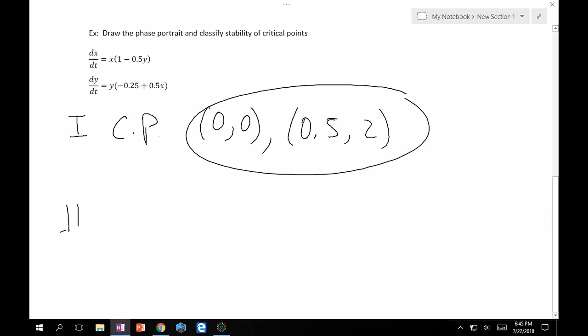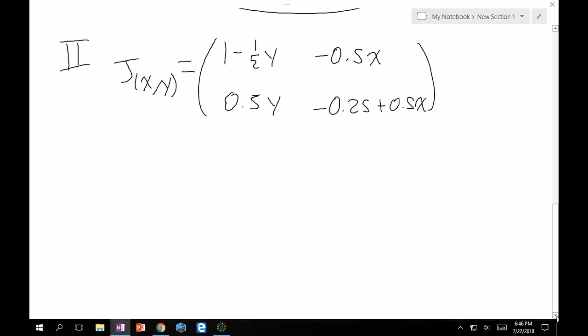Great. Let's find our Jacobian. Again, calculate this on your own time. This will be, and this, I mean, this is good practice, you know, one minus one-half Y, 0.5 Y, minus 0.5 X, and then minus 0.25 plus 0.5 X. Great. And then hopefully you've done enough now that, you know, just plugging your critical points, right?